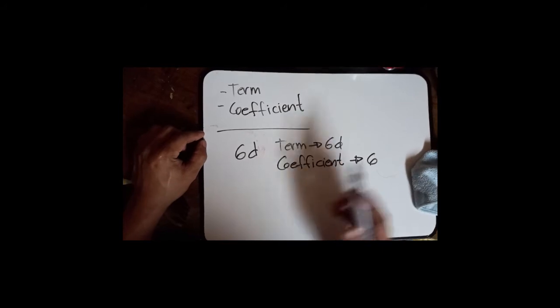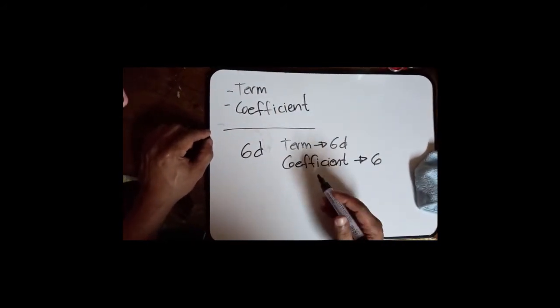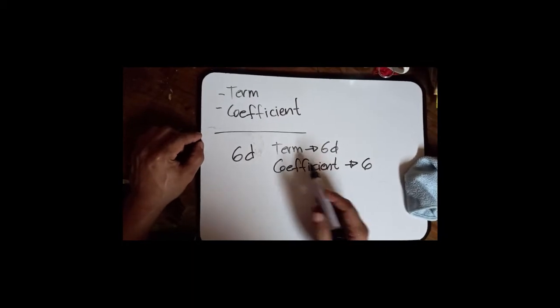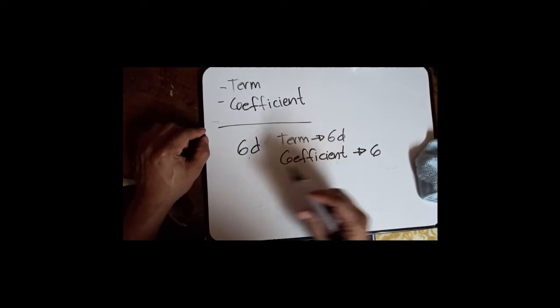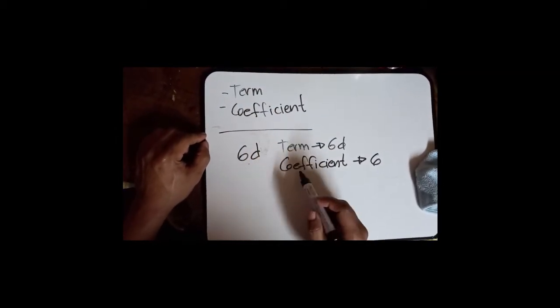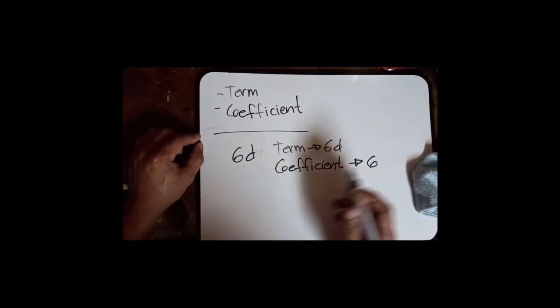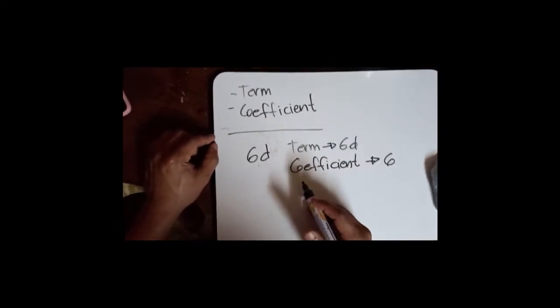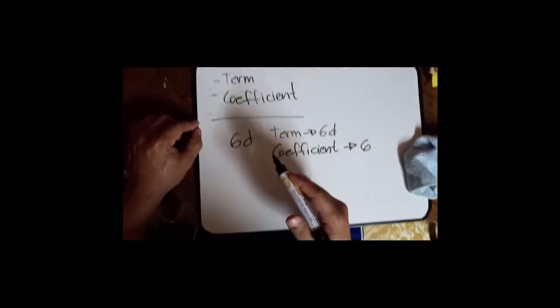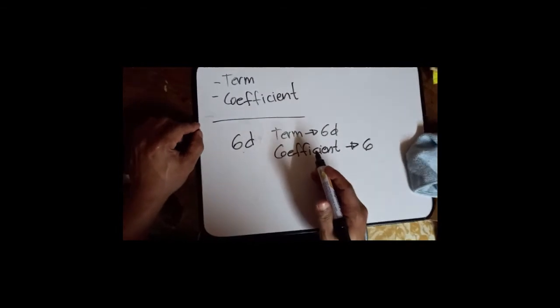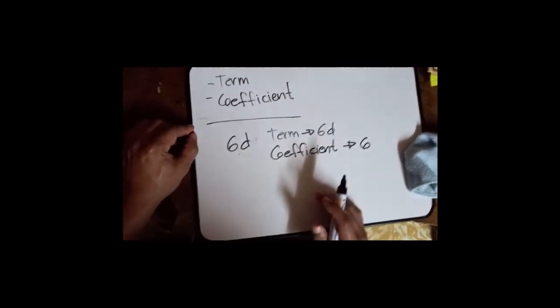Whenever you are asked what is the coefficient of this mathematical expression, example 6d, always look for the leading number. In this case the leading number is 6, so therefore the coefficient is 6. If you're asked for a term, terms are groups of expressions separated by addition and subtraction operators. Let's take another example.